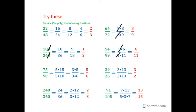75 ends in a 5 and 90 ends in a 0. So I know 5 goes in. 75 is 5 times 15 and 90 is 5 times 18. And 15 is 3 times 5 and 18 is 3 times 6. So we end up with 5 over 6.